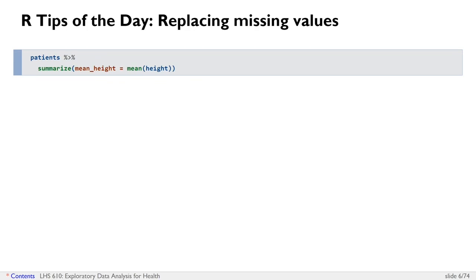So let's say we wanted to replace the missing value with the mean value. This is generally not a good idea, but there are better ways of filling in missing values, which we refer to as missing value imputation. We'll come back to that later in the course. But it is sometimes helpful to fill in the missing values if you need this column for some kind of downstream analysis, and you've decided to fill in the missing values with the mean value.